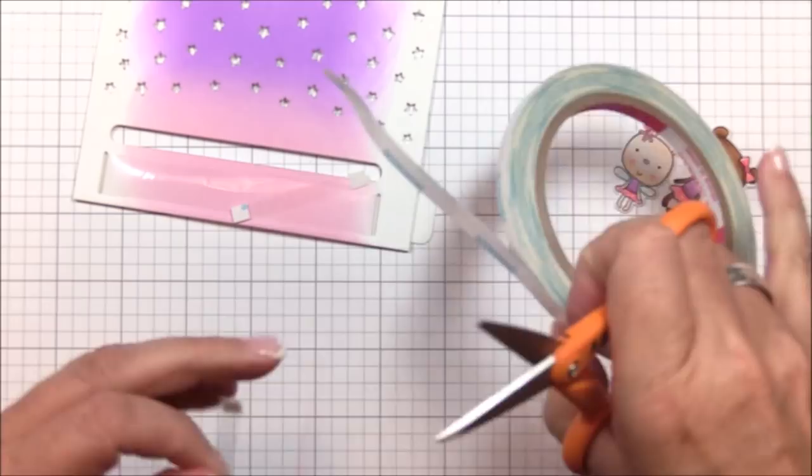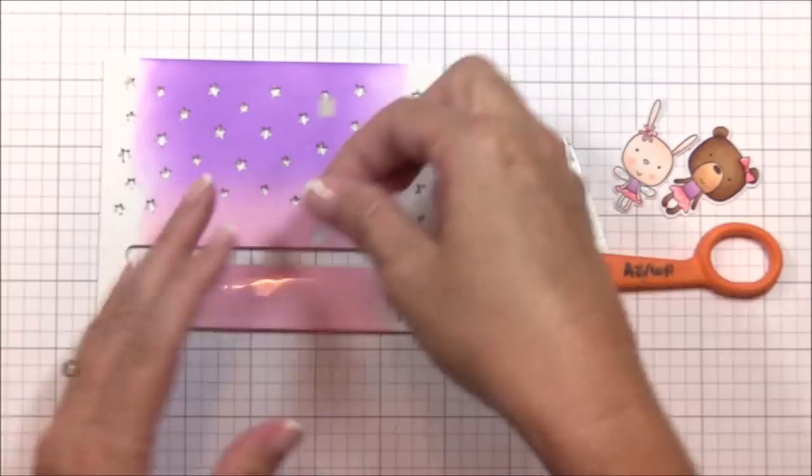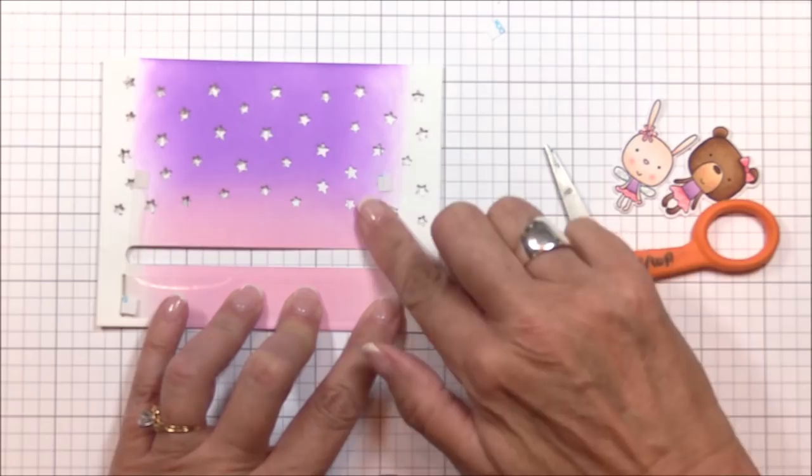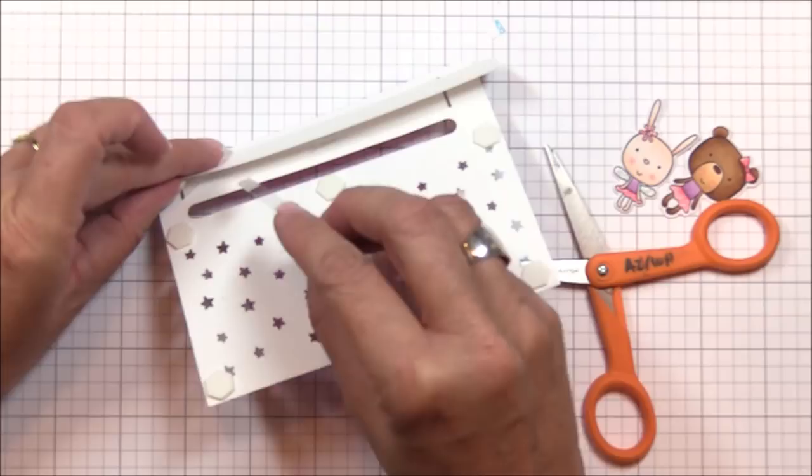And now I can adhere the tabs to the loop. First, I make sure that my pull tab is pushed as far in as it'll go. Then I peel off the liner paper from the bottom tab of one of the pieces of acetate and adhere it to the far right of the loop, just inside the right opening of the channel.